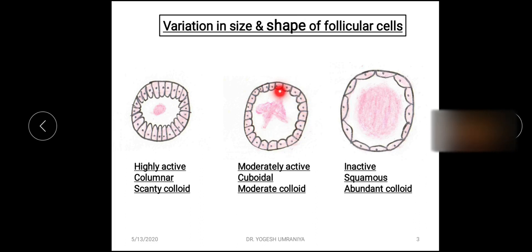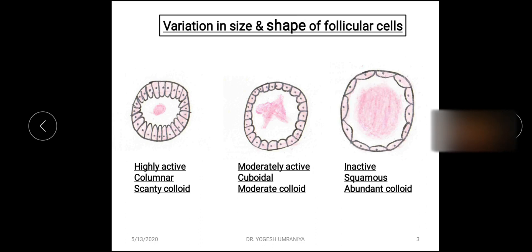The second one represents the moderately active stage of the thyroid follicle. Here the follicular cells are cuboidal in shape, and the amount of colloid is moderate compared to the highly active thyroid follicle. The third and last is the inactive thyroid follicle, where the shape of the follicular cell is squamous in type and the colloid material within the cavity is abundant compared to the highly active or moderately active types. In any thyroid gland, various proportions of highly active, moderately active, and inactive thyroid follicles are present.